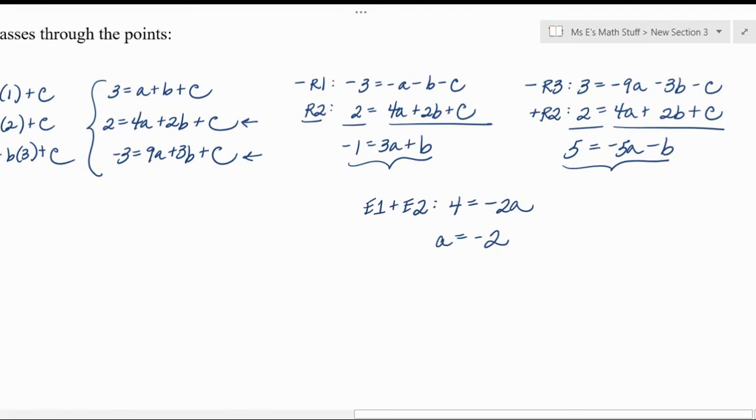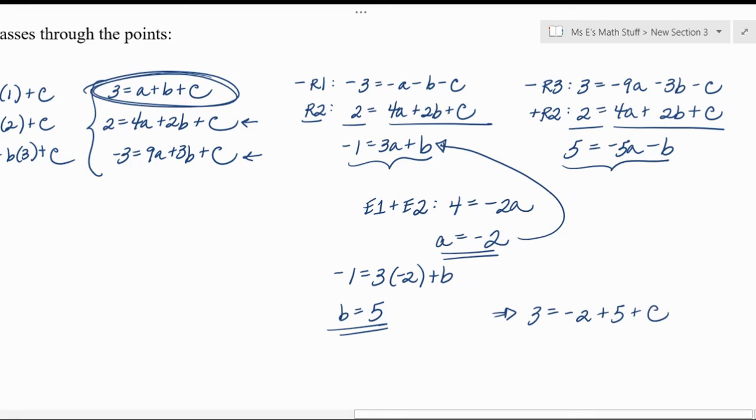And then to find b, I think I like putting it back, substituting it in there. Let's see, negative 6, add it over, so it looks like b would be 5. And then now that I know two of the values, I'm going to go back to one of the original equations. I really like row one, so I'm just going to use that one because it's simplest. And so that would give me 3 would equal a plus b plus c. Looks like 3 equals 3 plus c, so c would have to be 0.